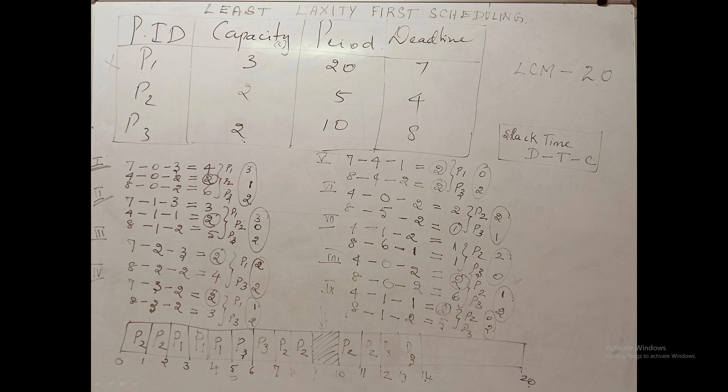This is how the Least Laxity First scheduling algorithm works — using deadlines to calculate the slack time of each process and selecting the process with the minimum slack time for CPU execution. It differs from the Rate Monotonic scheduling algorithm in this regard.